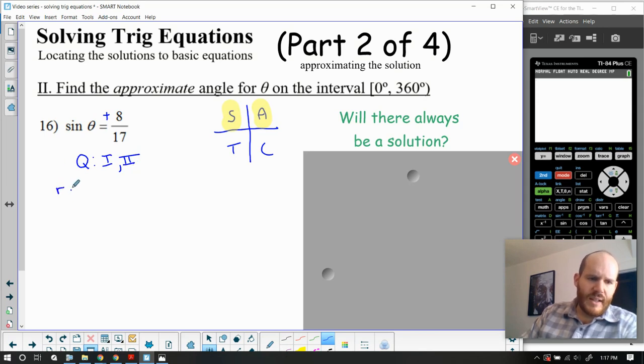The next thing that we had done in the last section was to consider the reference angle. In all the ones we did in the previous video, it was like one half or root three over two or root two over two, which were from the special right triangles like the 30-60-90 and the 45-45-90. This one is from neither of those.